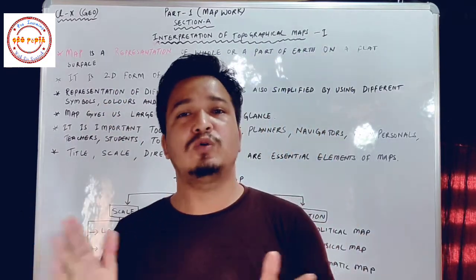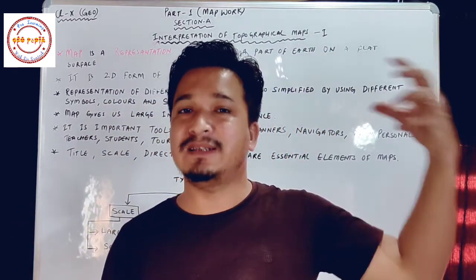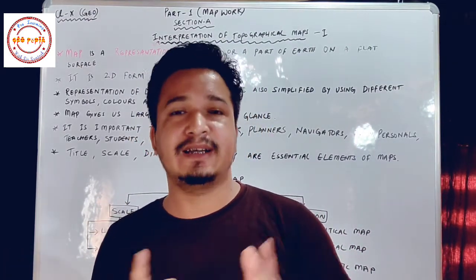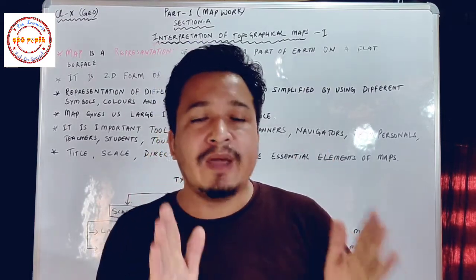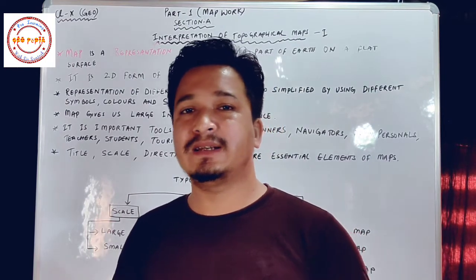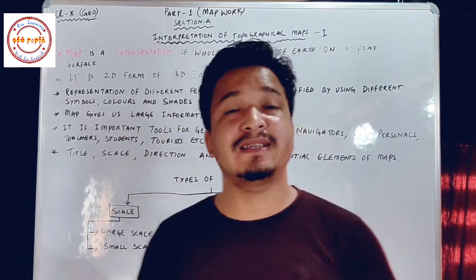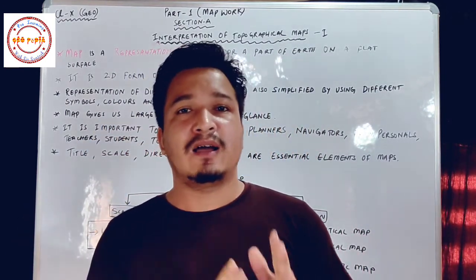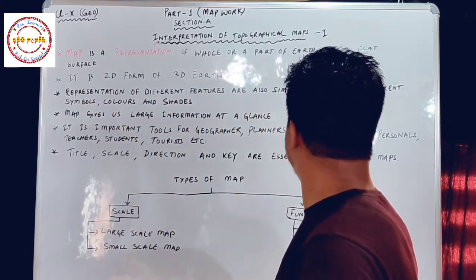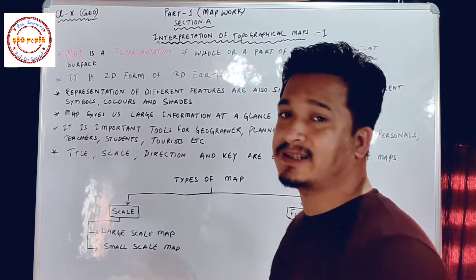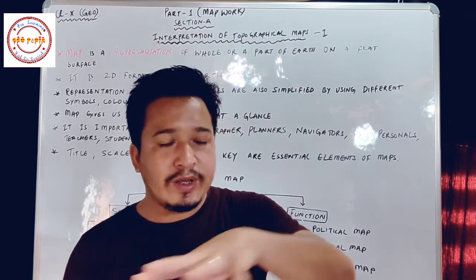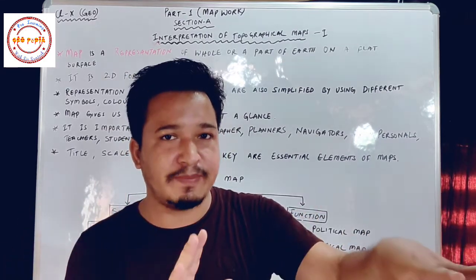A map is a 2D form of the 3D earth. A map is two-dimensional, meaning it has only length and breadth. Our earth, however, is three-dimensional — it has length, breadth, and height. The representation of different features is also simplified by using different symbols, colors, and shades.